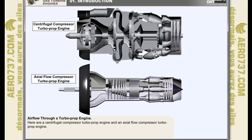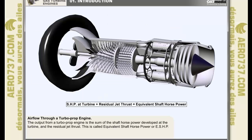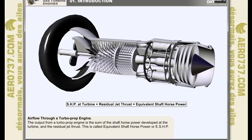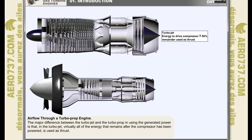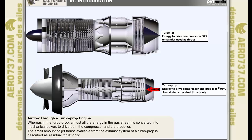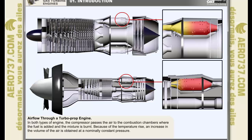This diagram illustrates both a centrifugal compressor turboprop engine and an axial flow compressor turboprop engine. The output from a turboprop engine is the sum of the shaft horsepower developed at the turbine and the residual jet thrust. This is called equivalent shaft horsepower or ESHP. The major difference between the turbojet and the turboprop in how they handle the generated power is that in the turbojet, virtually all of the energy that remains after the compressor has been powered is used as thrust. Whereas in the turboprop, almost all the energy in the gas stream is converted into mechanical energy to drive both the compressor and the propeller.